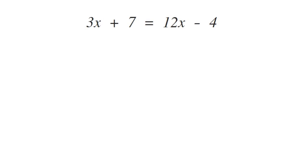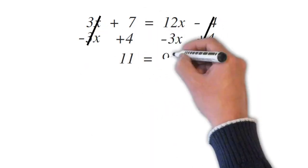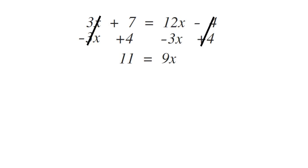That has 3x and 12x, with the largest coefficient being 12. So we're going to get all the x's on the 12x side and all the constants — the non-x terms — on the other side. We subtract 3x from both sides to get that 3x away from the left side, and then we add 4 to both sides to get all the constants on the left side. That undoes the 3x's and undoes the 4's and gives us 11 equals 9x.